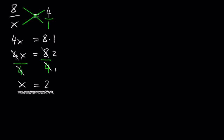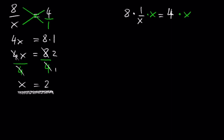You can also look at this equation as 8 times 1 over x is equal to 4 and solve it the regular way. To get rid of x in the denominator, since 1 is divided by x, the opposite of dividing is multiplying, so multiply by x on both sides. This gives 8 is equal to 4x. Divide by 4 on both sides and we get x is equal to 2.